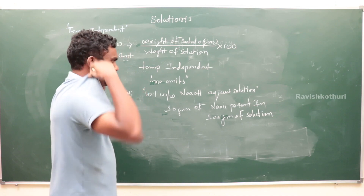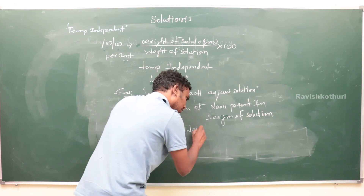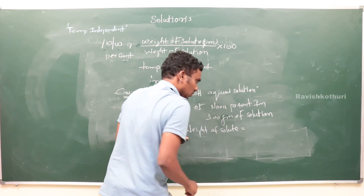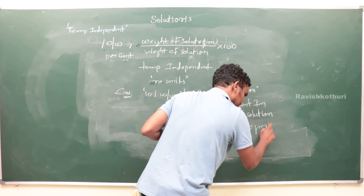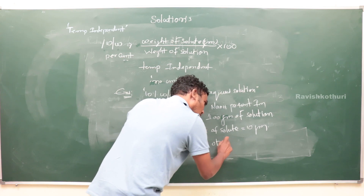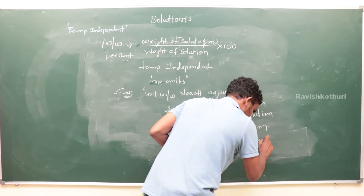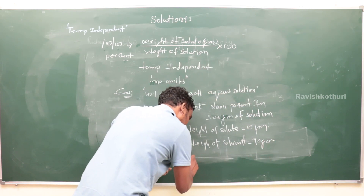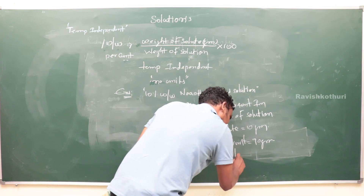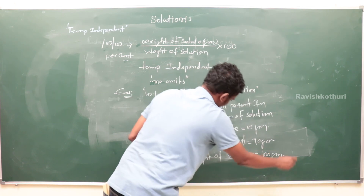So 10 grams of NaOH are present in 100 grams of solution. Weight of solute = 10 grams. Weight of solvent = 90 grams. Weight of solution = 100 grams.